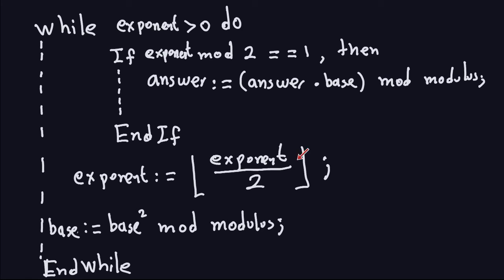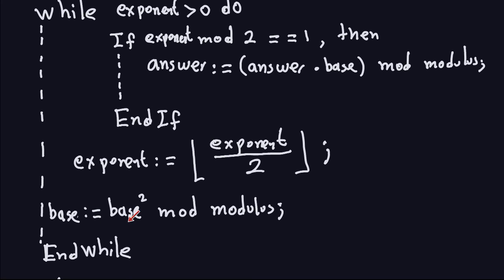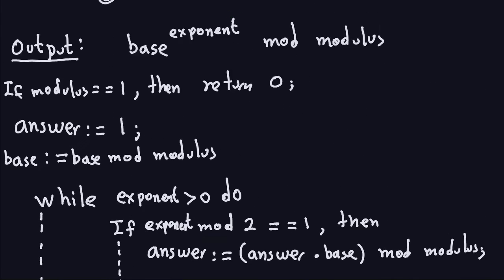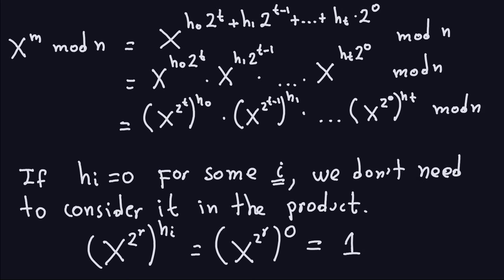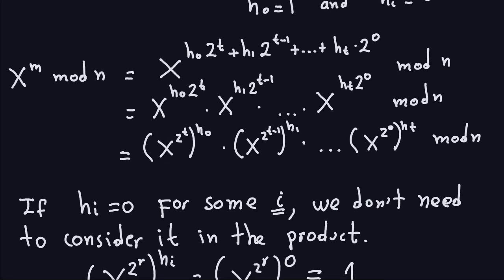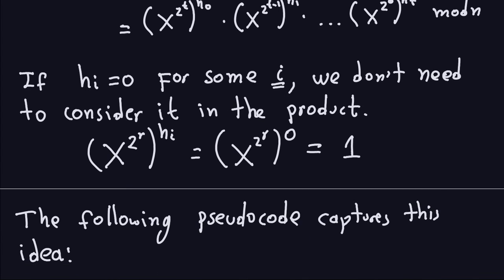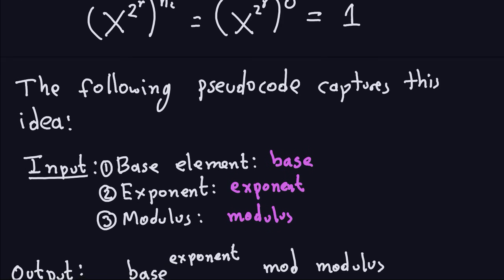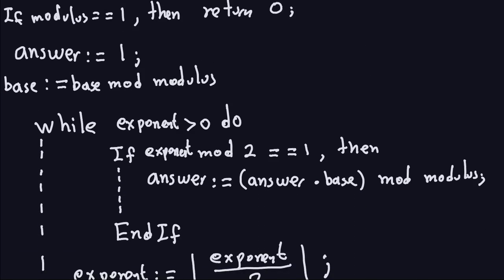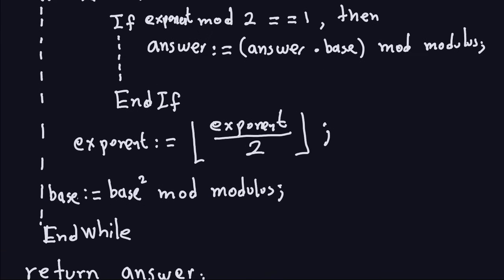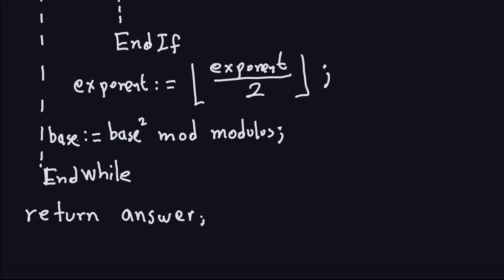This is the floor function. In Java you can just use integer division since we're working with positive numbers — it gives the same result. And of course you have to update the base each iteration, squaring it to account for x to the 2 to the t in the formula. I'm going a bit faster on this one since the main idea is to give you another way to do modular exponentiation. We already have a good one — the square-and-multiply algorithm.